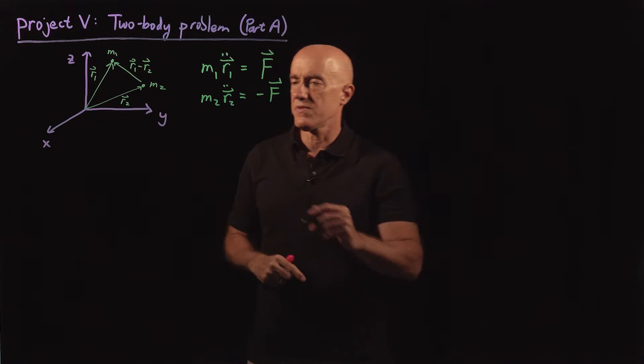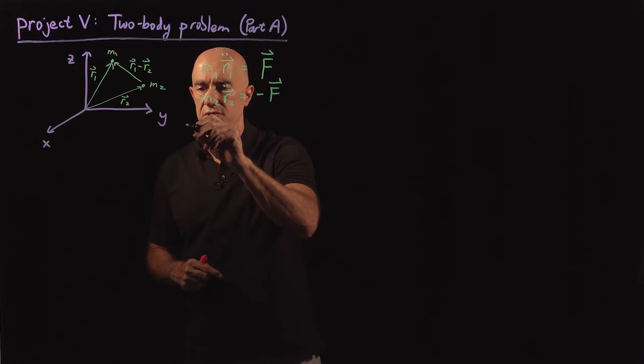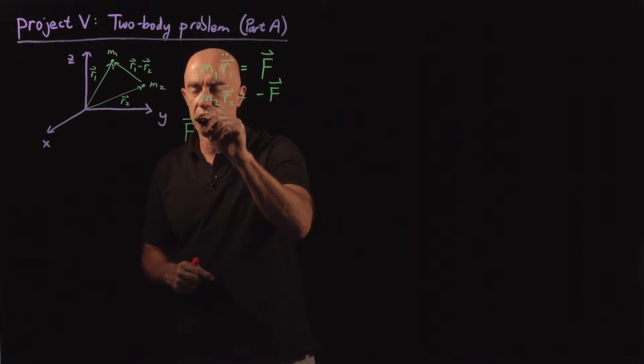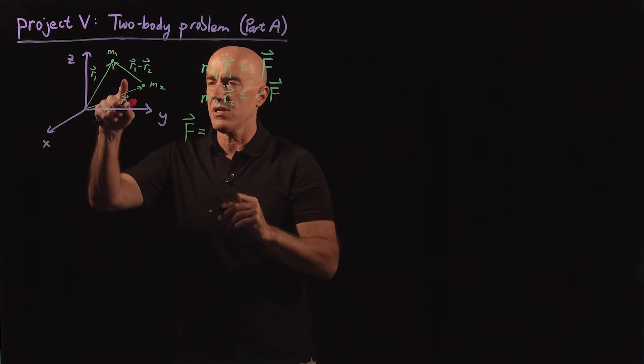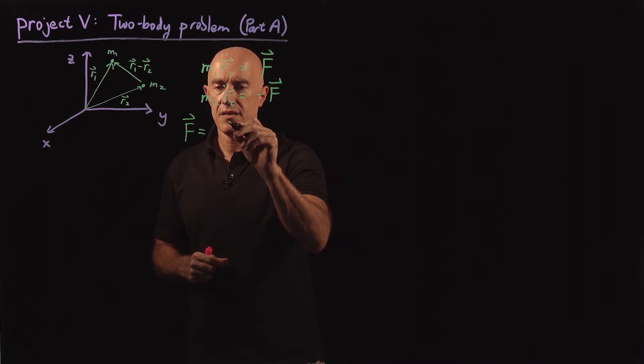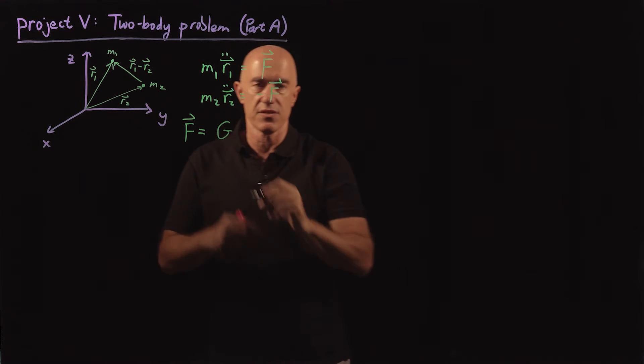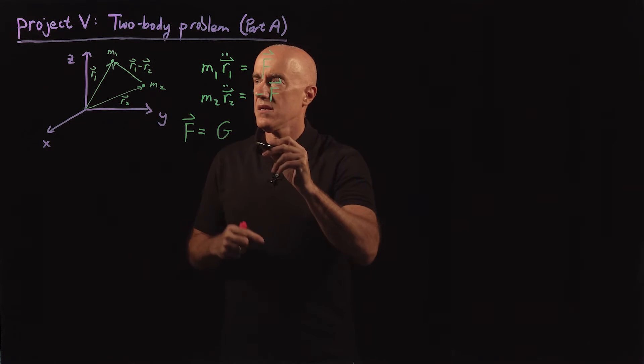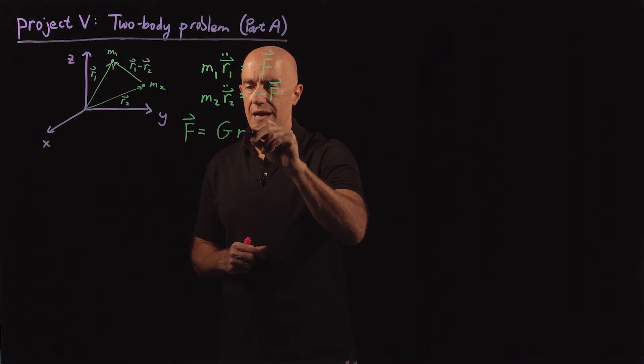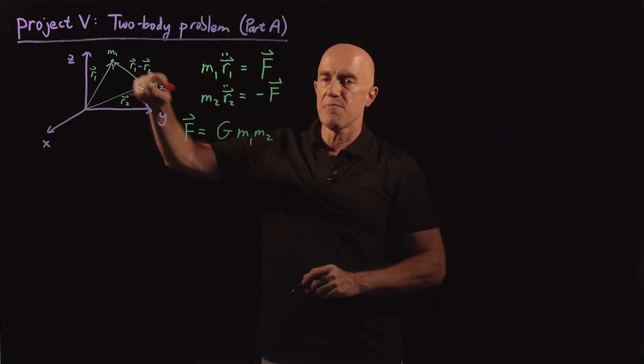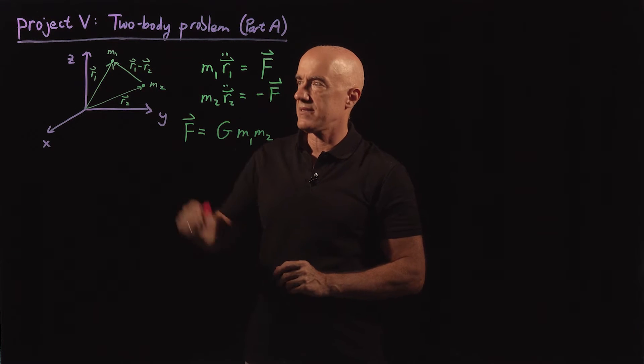And then the force comes from Newton's law of universal gravitation. So the force is proportional to the product of the two masses. The proportionality constant is the gravitational constant, capital G times m1 m2, and inversely proportional to the distance between the two masses.